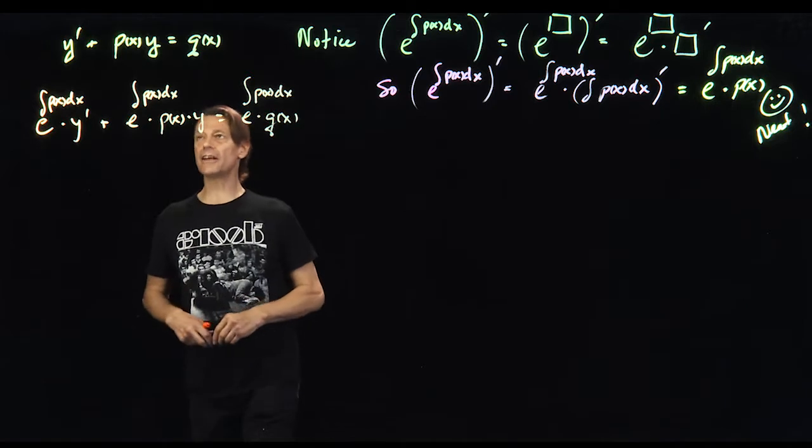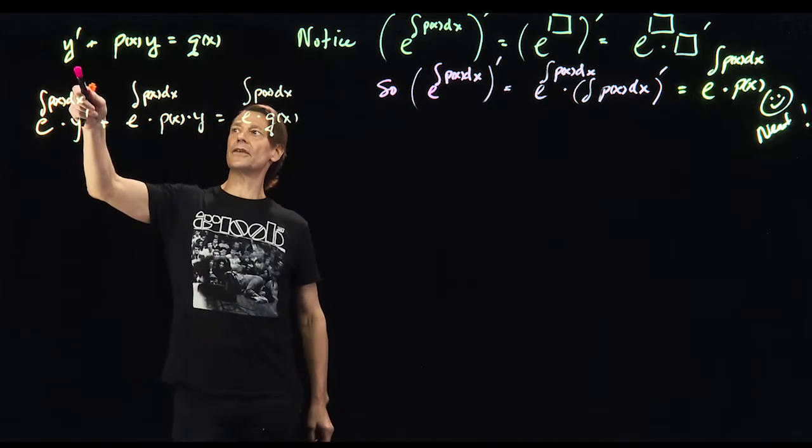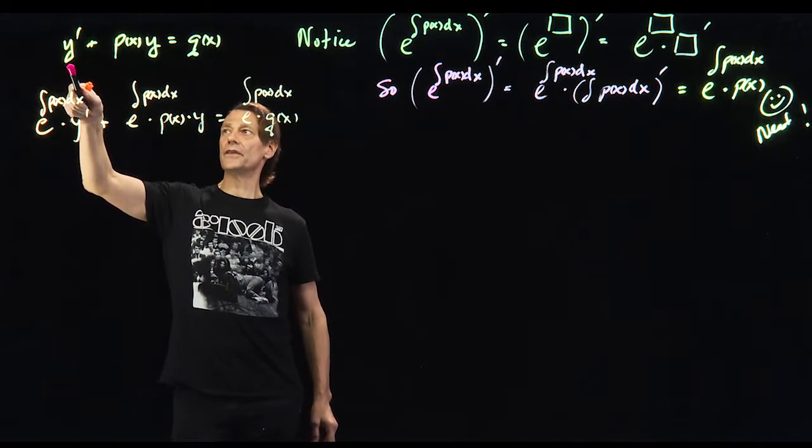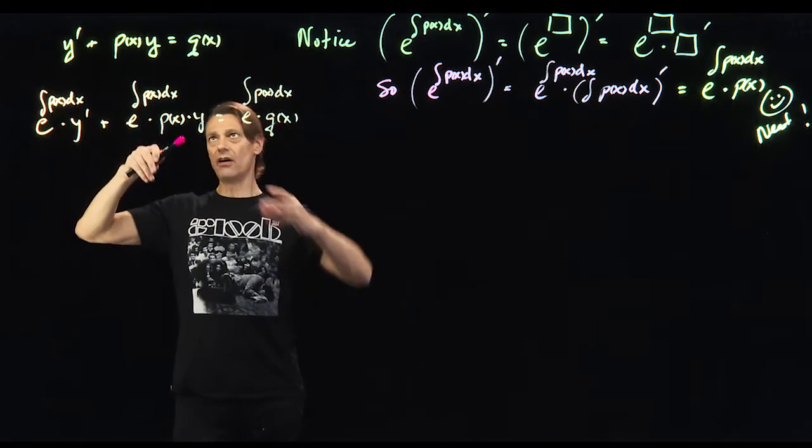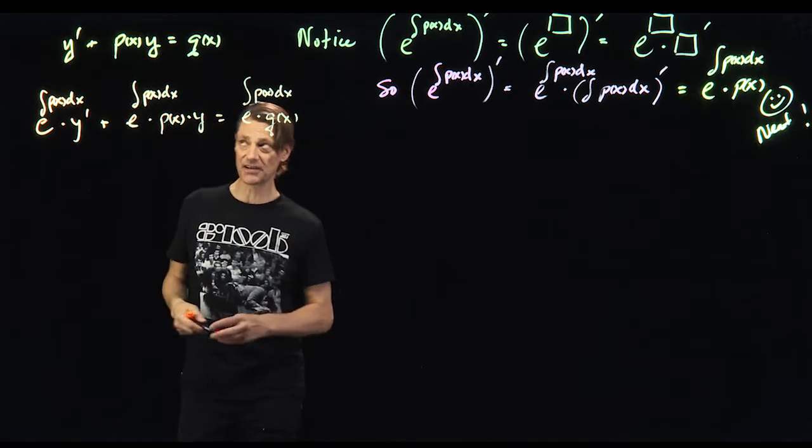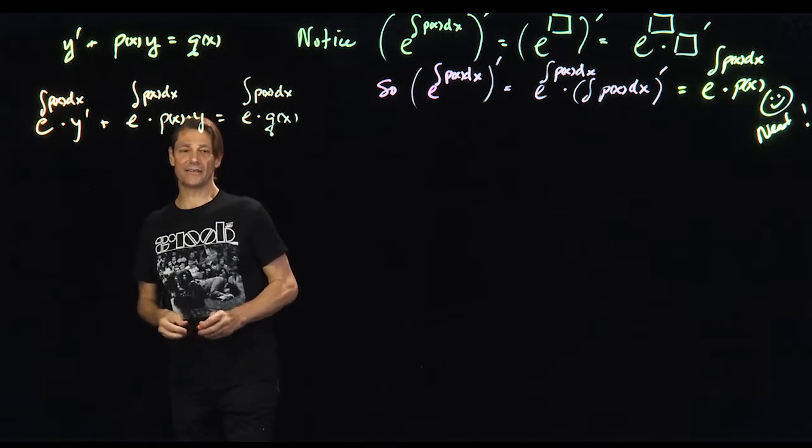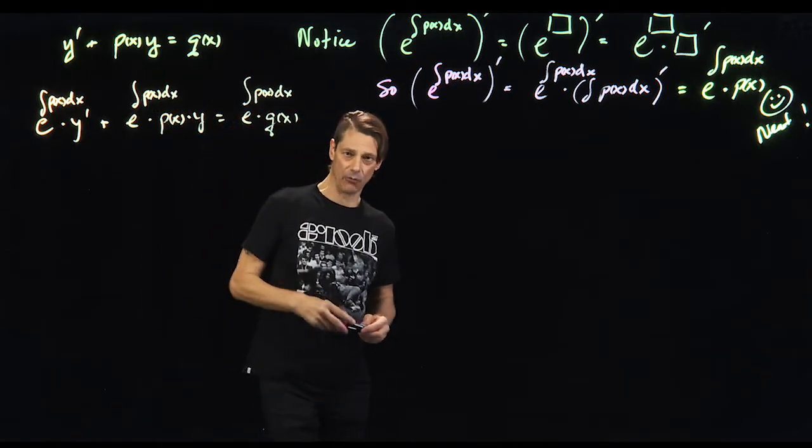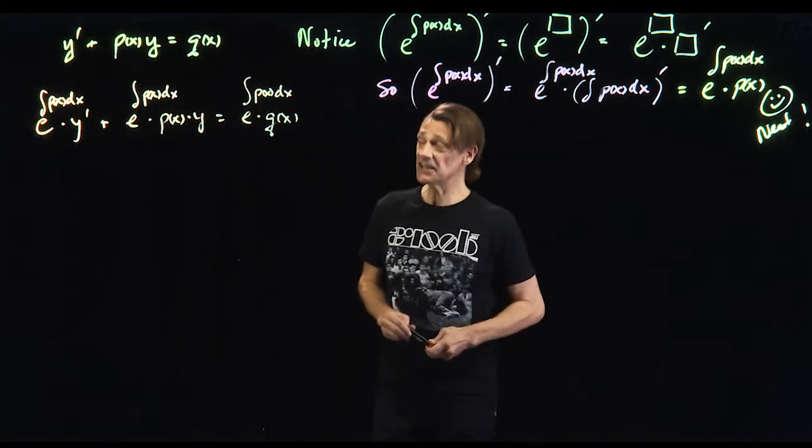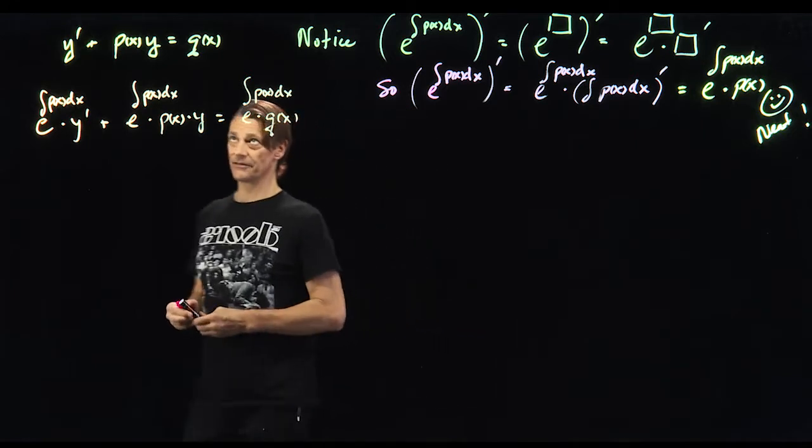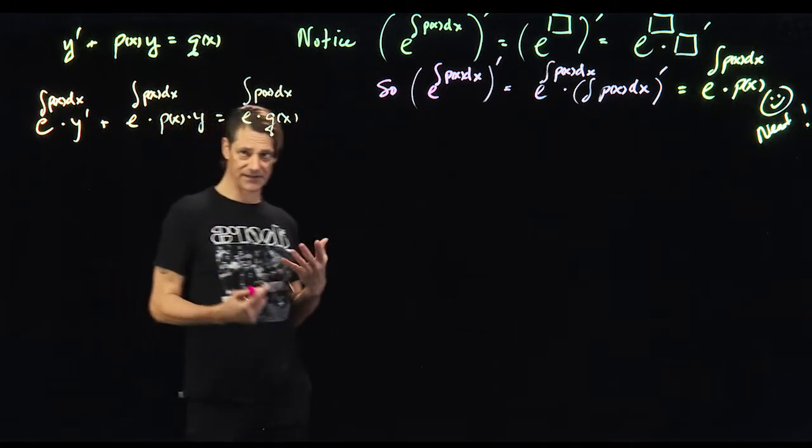What does it mean by linear? Linear just means that there's only the derivatives of y, there's no like y squared. You can multiply it by a function just in x, but these are very well behaved. And this is a particular instance of a linear differential equation, and I'm going to present the solution to this.